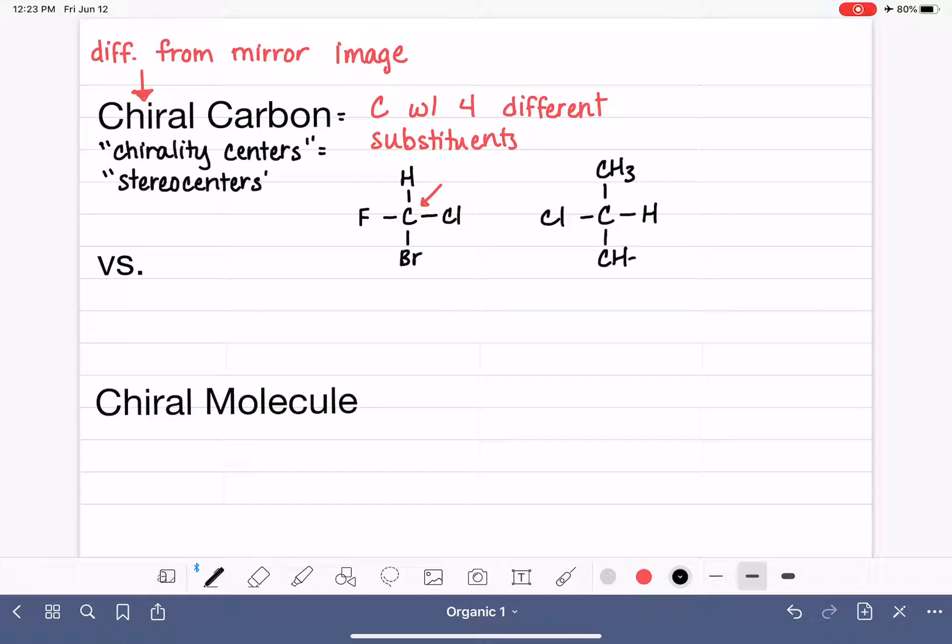Here would be another chiral carbon. If we're focusing on the fact that chirality for a carbon atom comes from the presence of four different substituents, then we can see that this has a chlorine, a hydrogen, and not a carbon and a carbon, but a CH3 and a CH2CH3, which are two different things. So this carbon atom is chiral because it has four different substituents.